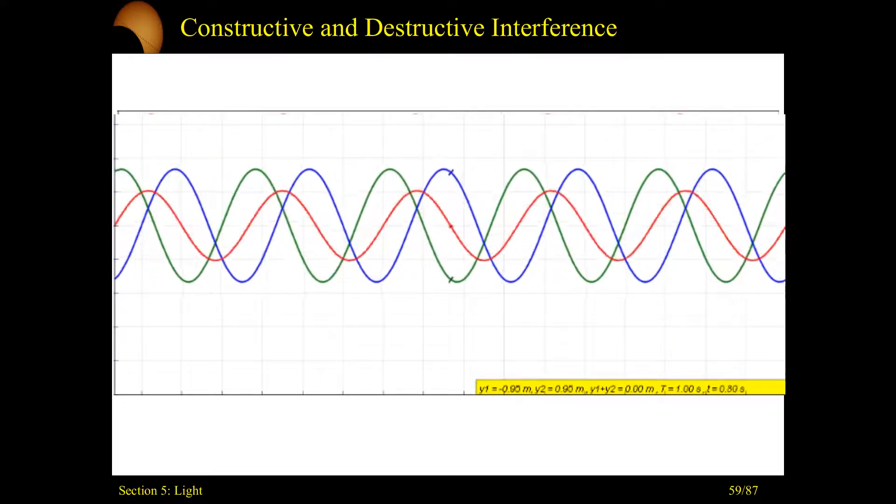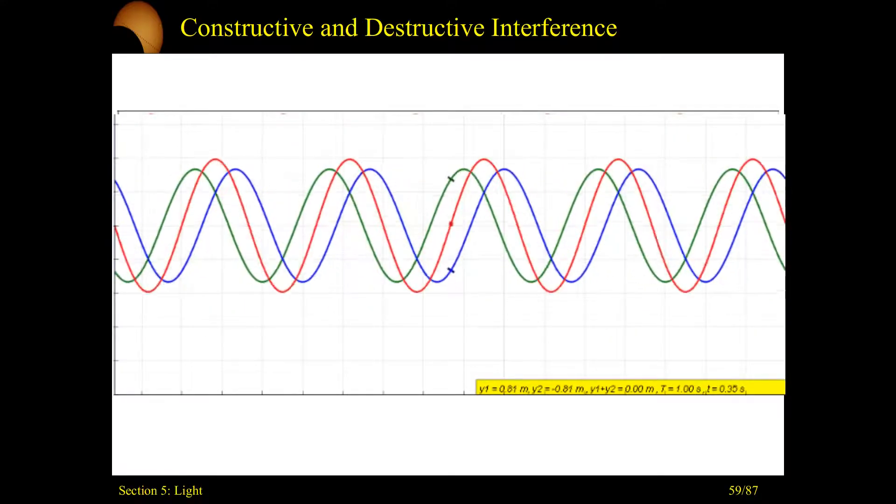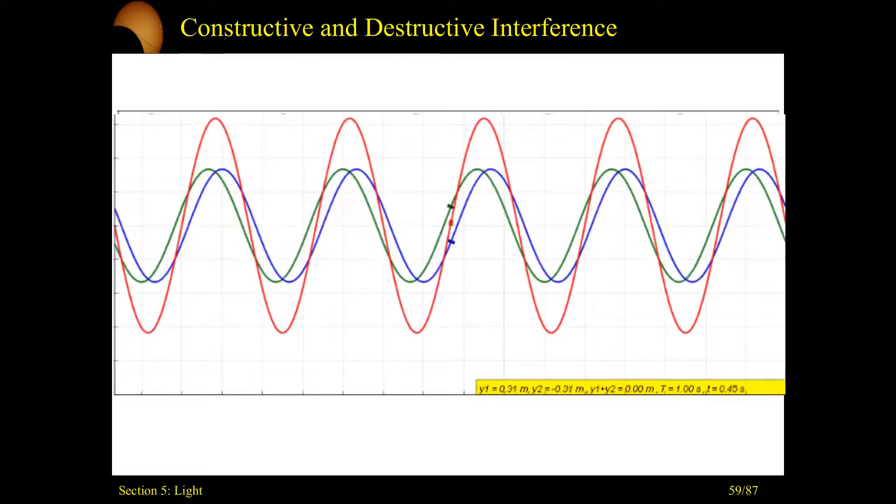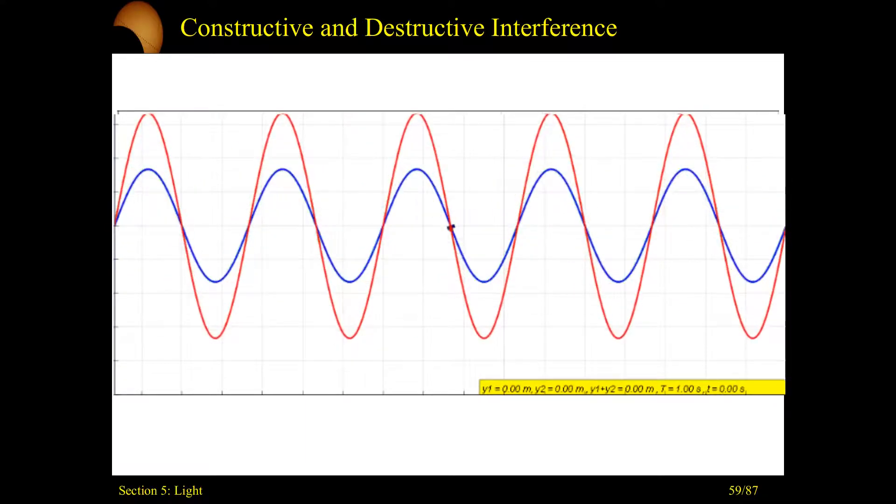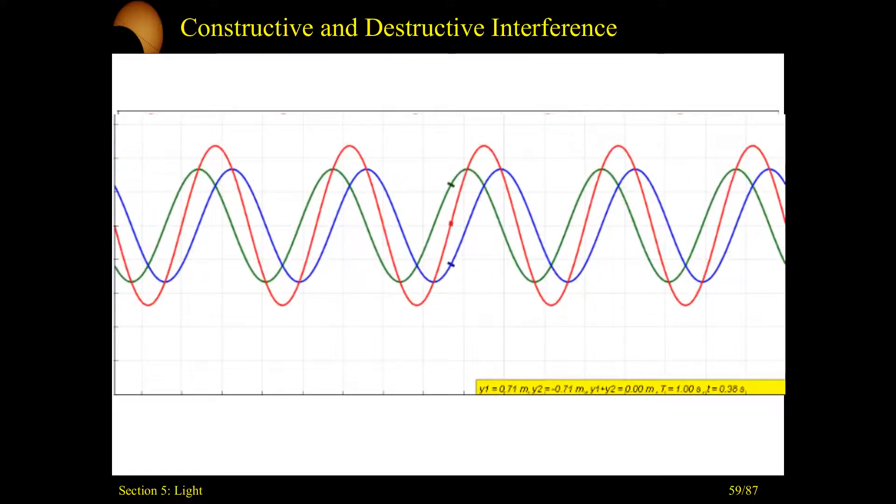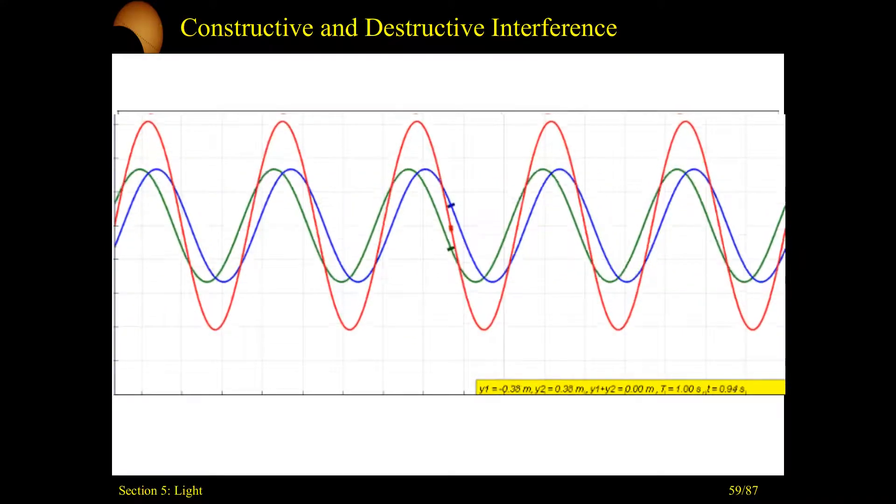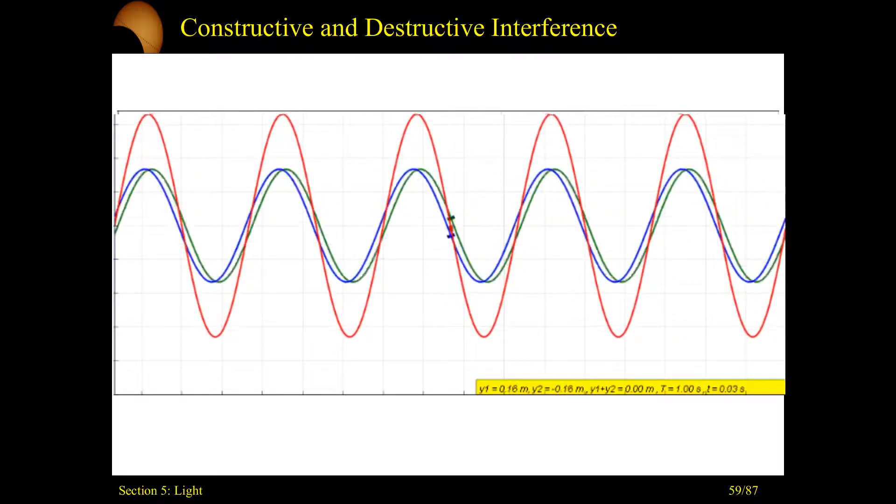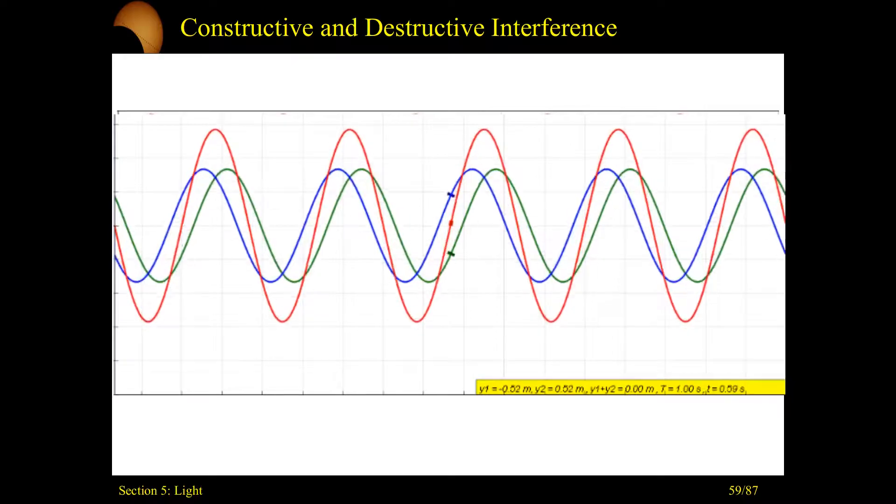So when they're in phase, you get maximum constructive interference and you get a big spike, an increase. When they're out of phase, it cancels out and the red line goes flat for a moment. So as these two waves go across each other, constructive interference, destructive, back to constructive. That's what's happening when we send our waves through the double slit.